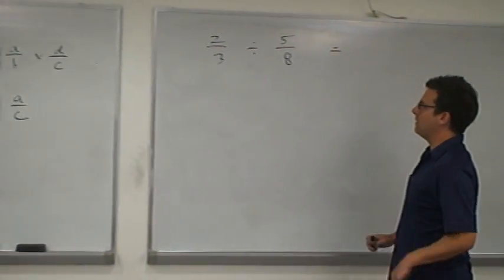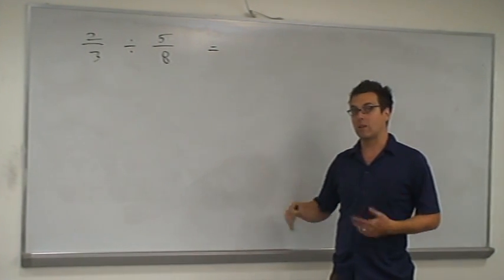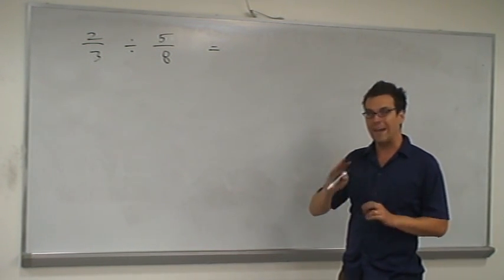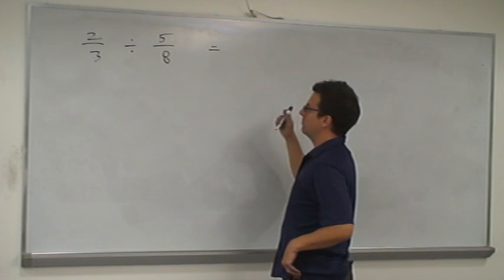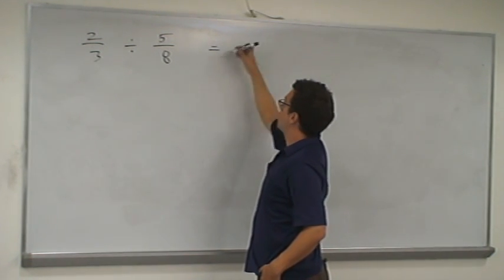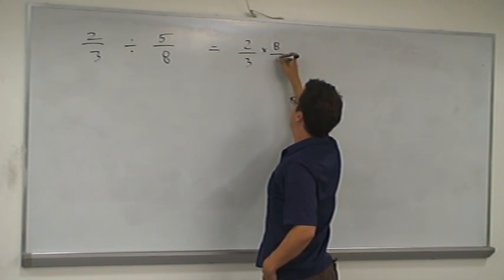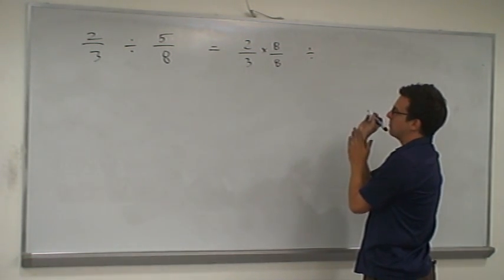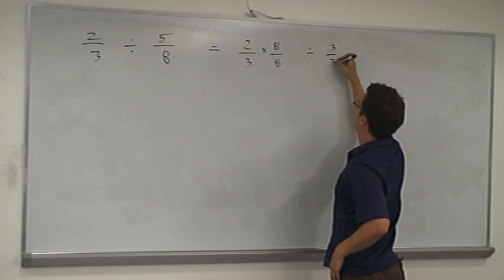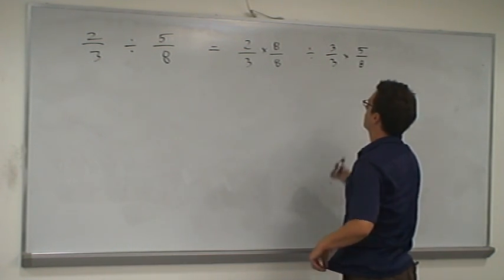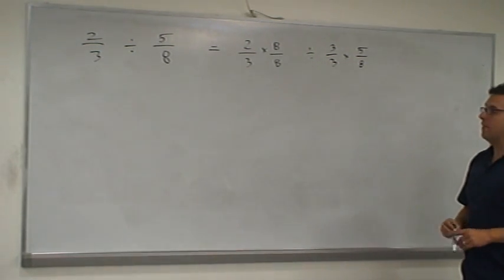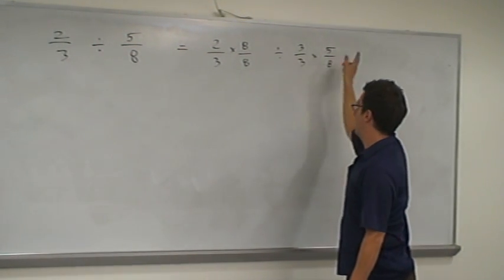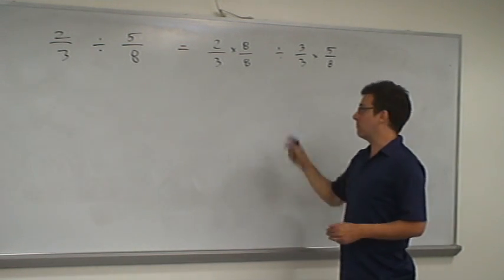Let's carry out the process. We know we need a common denominator, which in this case would be 24. I'm not going to actually compute the products — I'm just going to write out what the arithmetic would be, and you'll see why in a moment. So we take two-thirds and multiply by eight over eight, and we take five-eighths and multiply by three over three. I know you'll want to multiply these out and write 16 over 24 and 15 over 24, but it's going to be more illustrative if we keep it in this form.